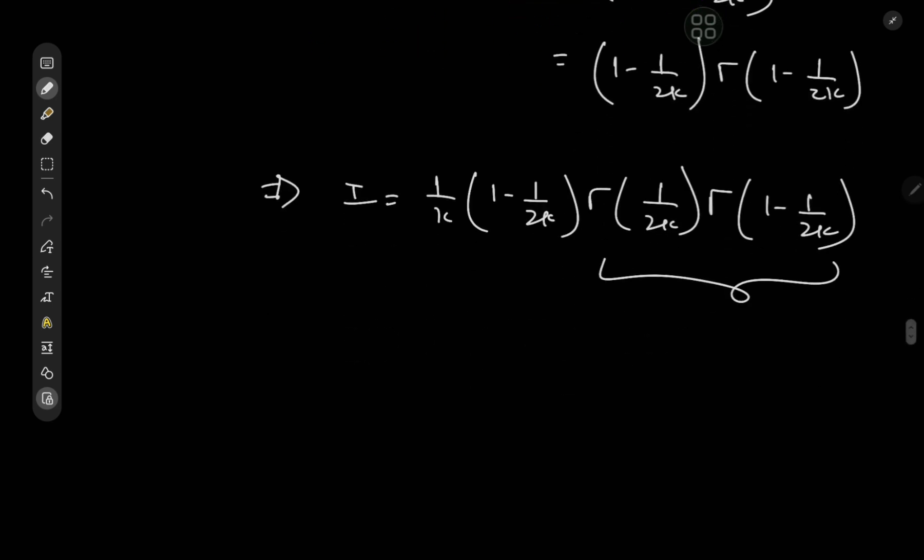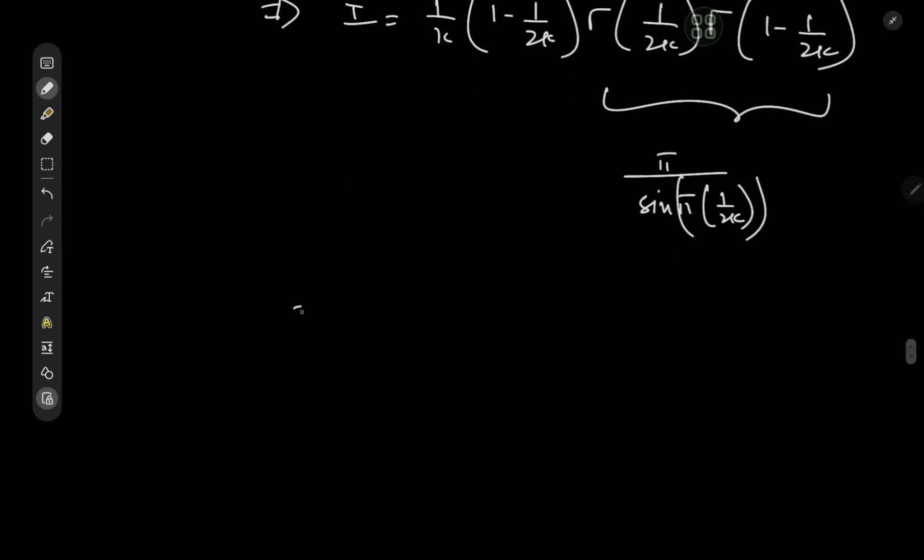And now we can invoke possibly my favorite tool, that's Euler's beautiful reflection formula by which we know that this thing equals π divided by the sine of π times the argument, which is of course 1/(2k) in this case. So we have I equal to (2k - 1)/(2k)^2 times π/sin(π/(2k)), which is a pretty cool-looking result indeed.